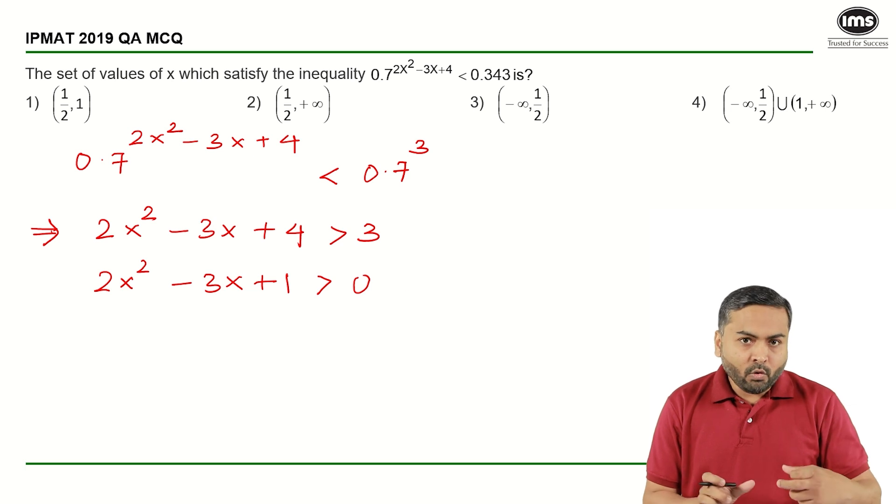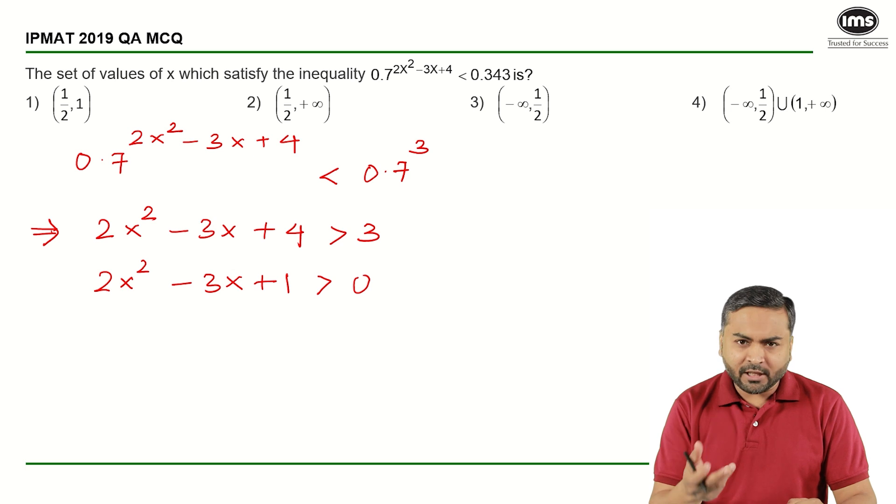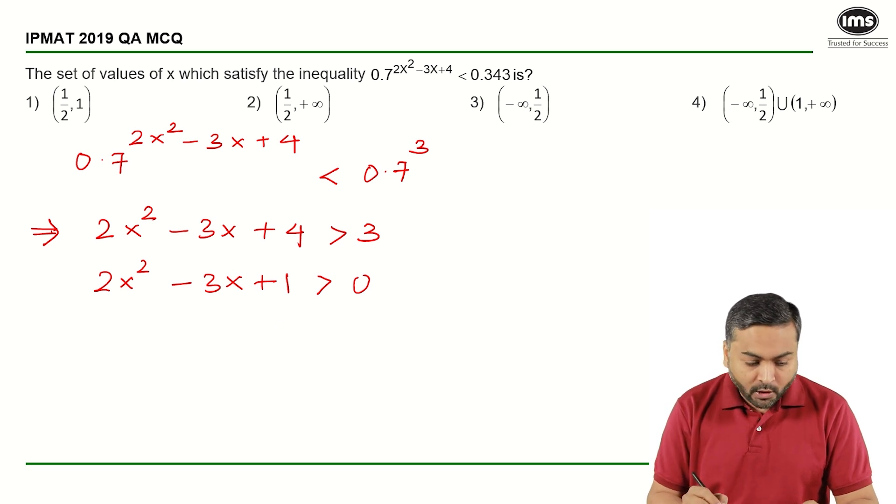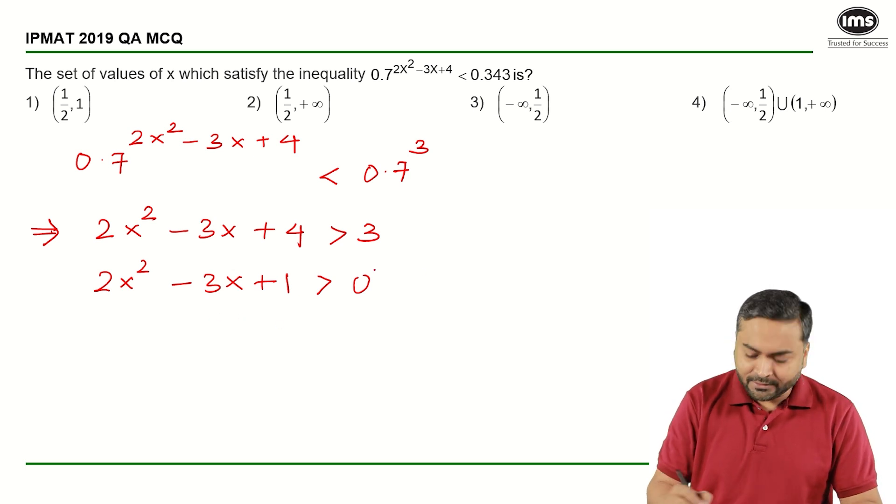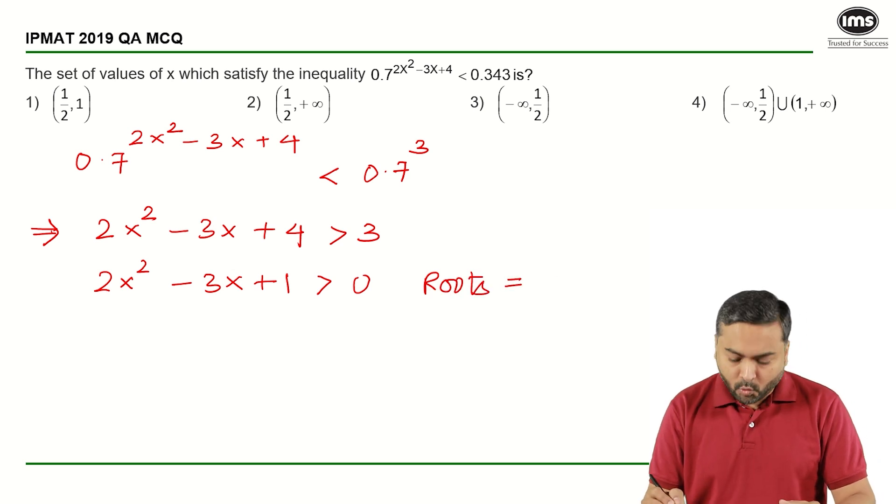Now what we will do? We will get the root of this quadratic equation. Let us say it is an equality. The roots would be nothing but the sum of the root is 3 and product of the root is 2.